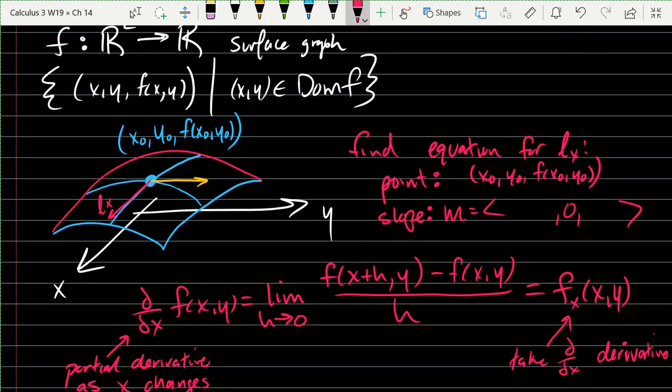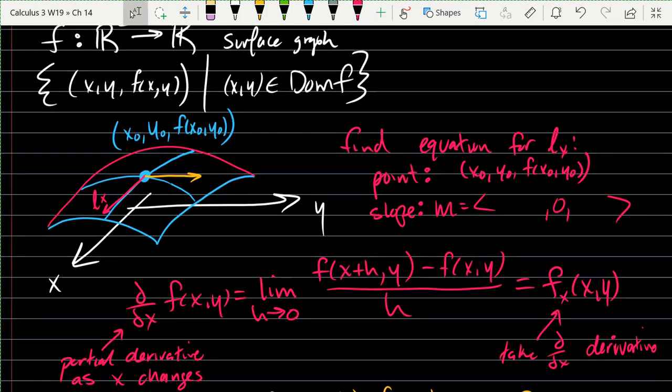So our slope is going to be a vector. Now, the X coordinate and the Z coordinate are not going to be zero. It's possible your Z coordinate is zero if you're going flat at that moment. But generally, your Z coordinate won't be zero. So here's the tricky part. So the Z coordinate, one way to think about it: if I go one in the X direction, how far am I going in the Z direction?